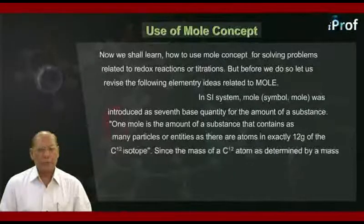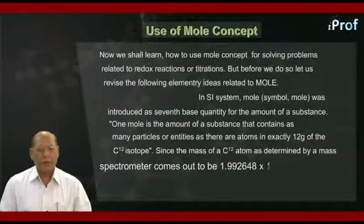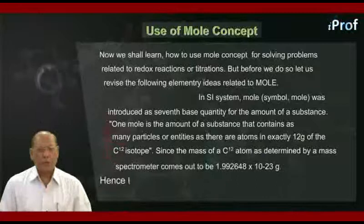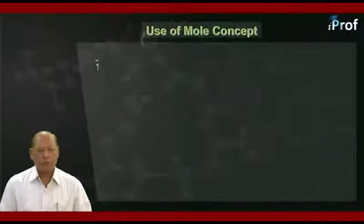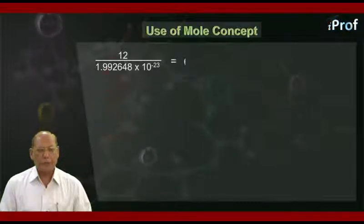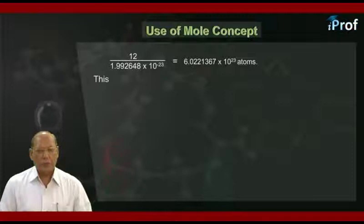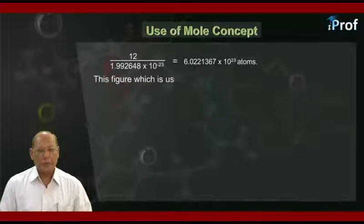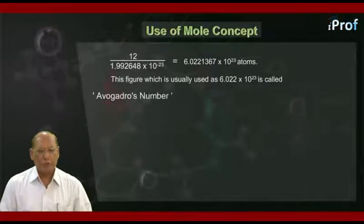as determined by a mass spectrometer, comes out to be 1.992648 × 10⁻²³ grams, hence the number of atoms in 12 grams of carbon-12 isotope will be equal to 12 divided by 1.992648 × 10⁻²³, which equals 6.0221367 × 10²³ atoms. This figure, usually used as 6.022 × 10²³ or sometimes 6.023 × 10²³, is called Avogadro's number.